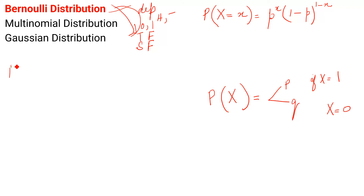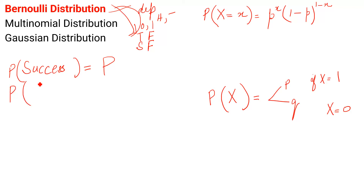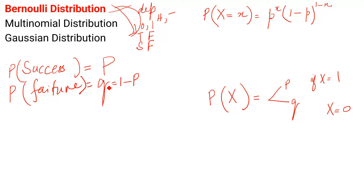The probability of success is equal to p, and the probability of failure is equal to q. Normally these two symbols p and q are used in books, and q is equal to 1 minus p. Whether it is lowercase or uppercase does not matter. So the probability of success is p and failure is q, which equals 1 minus p.